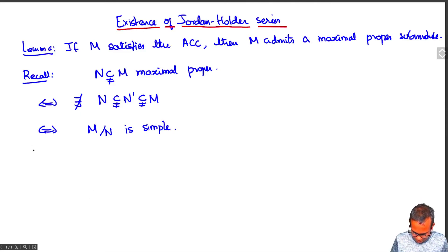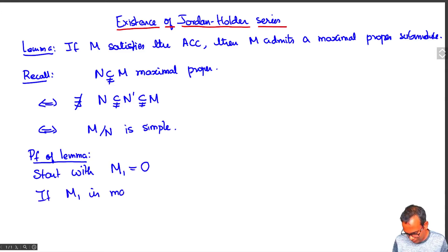Now let's prove this. We'll start with M1 equal to 0. If M1 is maximal, which means that M is simple, then we are done.